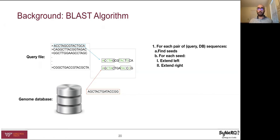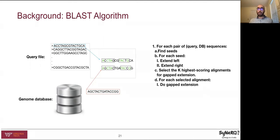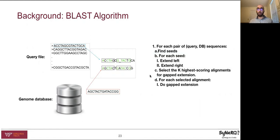The highest scoring alignments from this stage are then selected for further extension using gaps. A gapped alignment consists of attempting to insert gaps in different positions of both sequences to find better alignments. For example, inserting a gap here would enable further extension and find another match. The reason is that the scoring penalty for a mismatch between a character and a gap is less than the scoring penalty for a mismatch between two characters. The gap extension phase includes inserting gaps at different permutations of both sequences and is solved using dynamic programming.